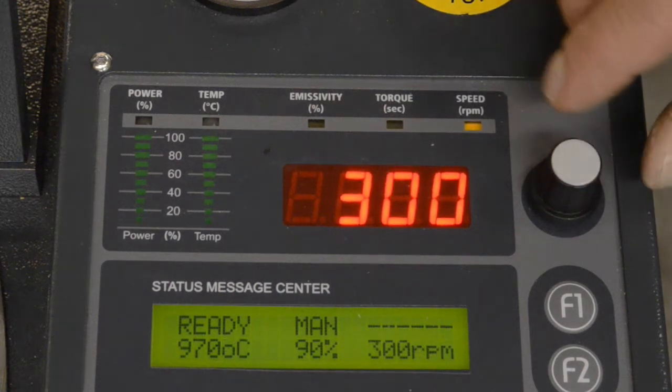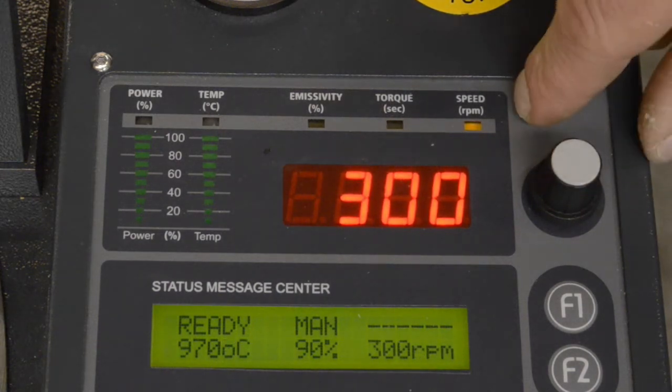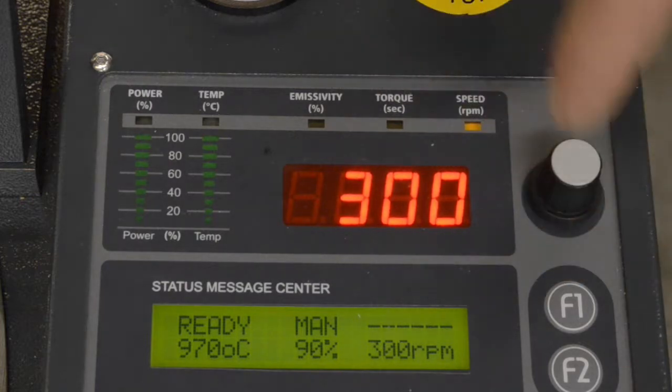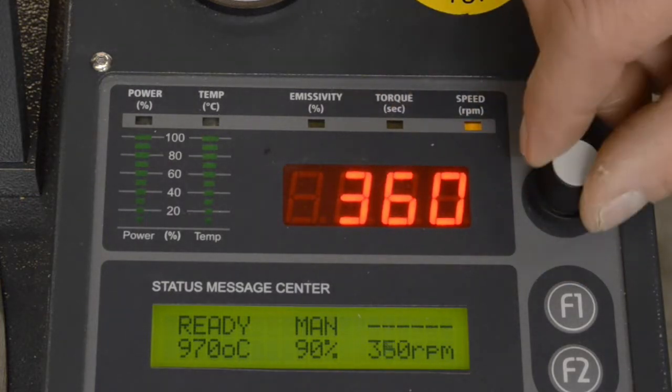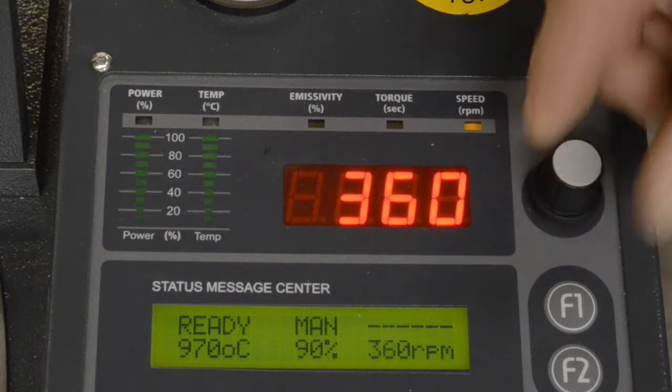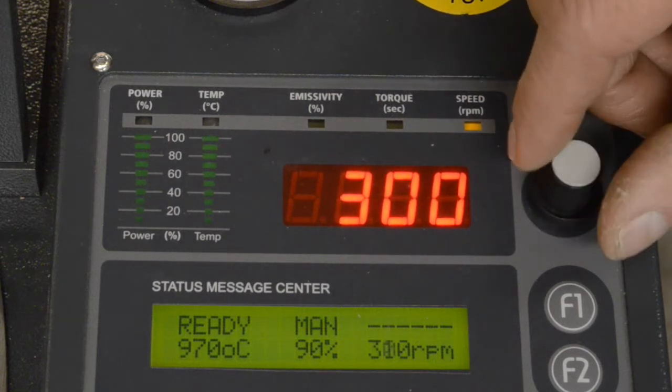The last setting is the speed, which is the revolutions per minute. How fast you want the machine to spin during the casting cycle. So very thin pieces could be at a higher RPM and then the heavier pieces could be at a lower RPM.